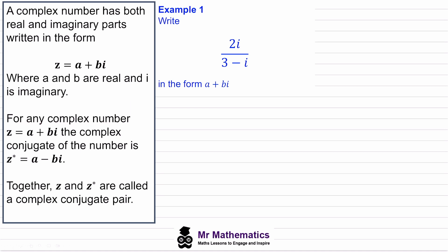For any complex number written in this form, the complex conjugate of the number, which we call z star, is equal to a minus bi. Notice we've changed the positive b to a negative b.